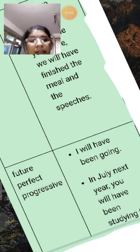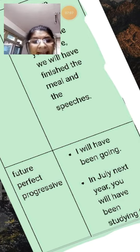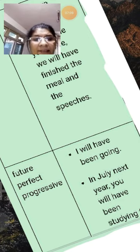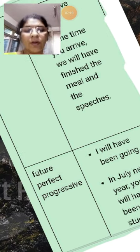For example: In July next year, you will have been studying. This is the future perfect progressive tense.